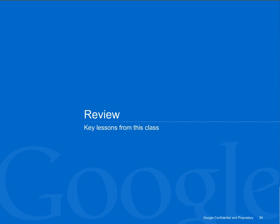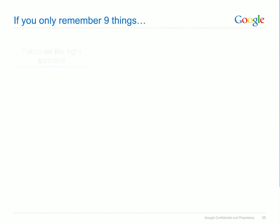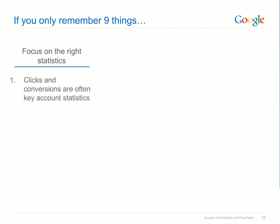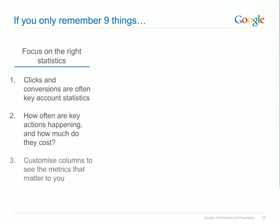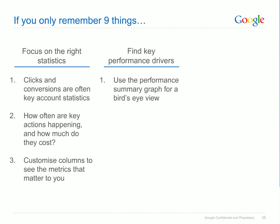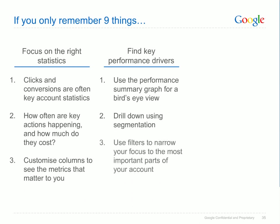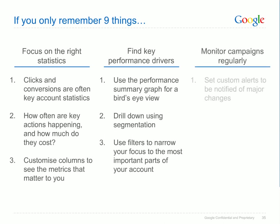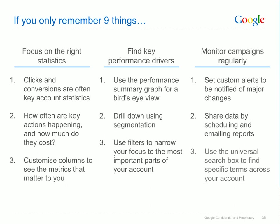That's it — let's do a quick recap of the key lessons from this class. We covered how to focus on the right statistics by looking primarily at clicks and conversions, including how often these actions happened and how much they cost, and how to view additional advanced statistics using the columns option. We covered how to find key performance drivers by using the performance summary graph to get a quick overview, using the segments menu to view different breakdowns, and using filters to narrow your focus to the most important parts of your account. And finally, how to monitor your campaigns regularly by setting custom alerts that notify you of key account events, sharing your data by scheduling and emailing reports, and using the universal search box when you're having trouble finding something in particular in your account.